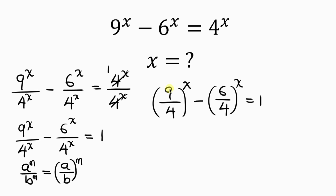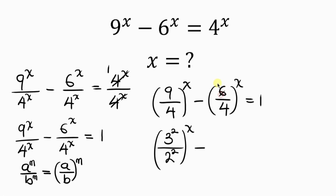Now, 9 is a perfect square and can be written as 3 squared, and 4 is also a perfect square written as 2 squared, all raised to the x. For the second term, 6 divided by 2 is 3 and 4 divided by 2 is 2, so we have 3 over 2 all raised to the x. This equals 1.